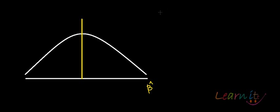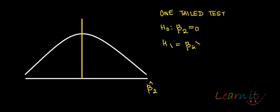So, supposedly if it is a one-tailed test, and your hypothesis is that H0 is that say beta 2 is equal to 0, and H1 is say beta 2 is greater than 0.